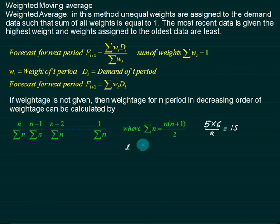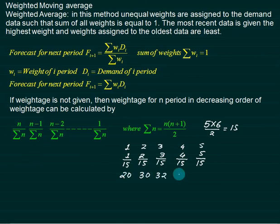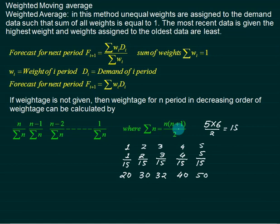For example, with five periods (1 through 5), sigma_n = 5×6/2 = 15. The most recent period gets weight 5/15, the next 4/15, then 3/15, 2/15, and the oldest gets 1/15. The sum is always 1. If actual sales are 20, 30, 32, 40, 50 respectively, the highest weight naturally goes to the most recent value of 50, and the lowest weight to the oldest value of 20 — unlike simple moving average which assigns equal weight to all.